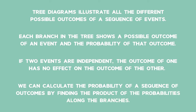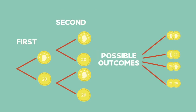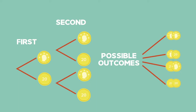For example, for a coin tossed twice, the following tree diagram will give all the possible outcomes. The first time the coin is tossed, the result could be head or tail. The second time the coin is tossed, the result could also be head or tail. The possible outcomes of two coins being tossed are head-head, head-tail, tail-head, or tail-tail.